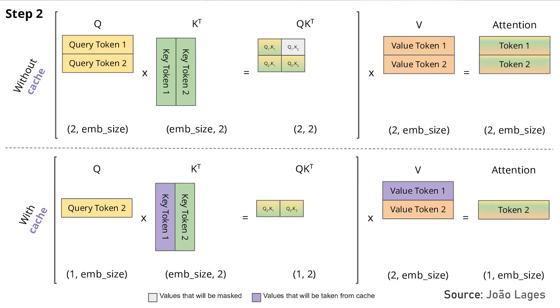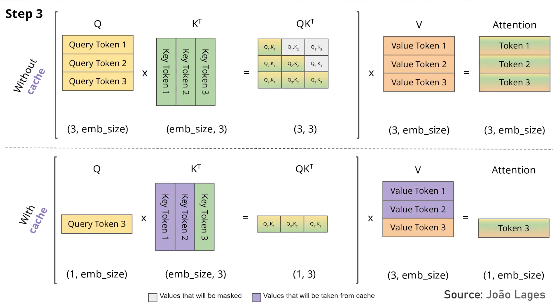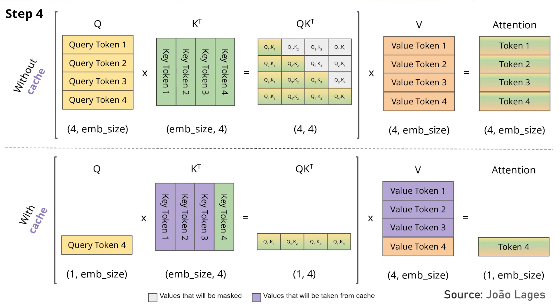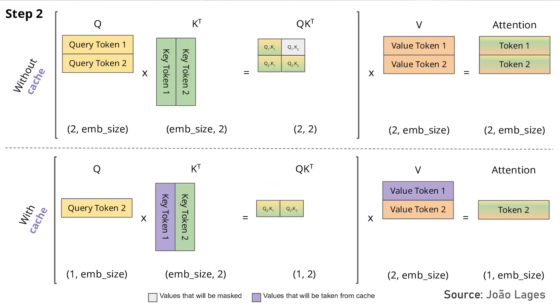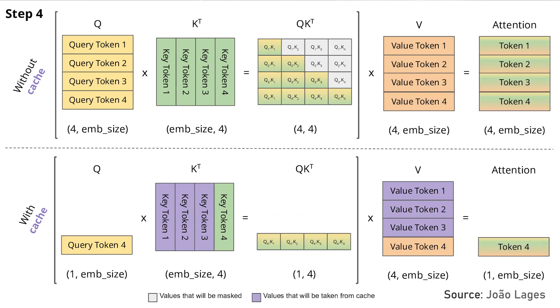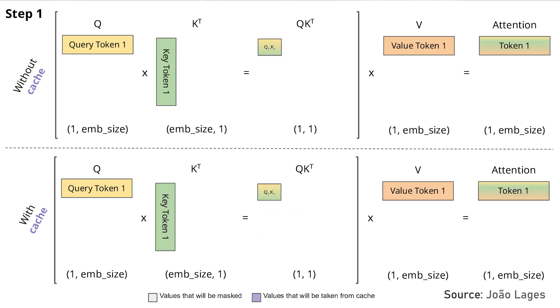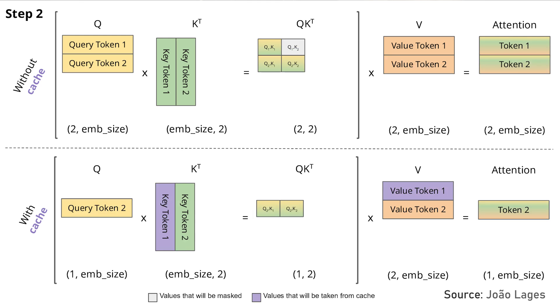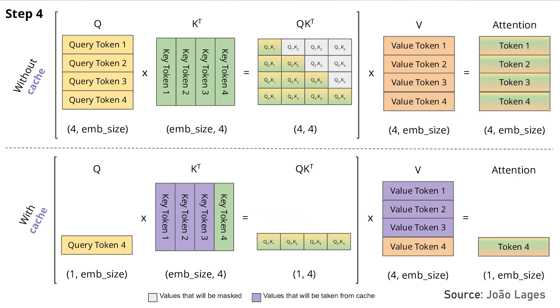Instead, if you've already done those computations and stored the keys and values on the GPU, then if I've stored the last N tokens and want to compute the output for token N+1, I don't need to pass those first N tokens through the entire model because I already have all their keys and values. You just need to do the forward pass for that last token, and then during attention you reuse those pre-computed keys and values. That's the only sequentially dependent part of the transformer.